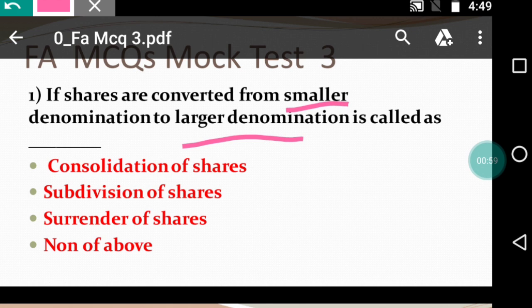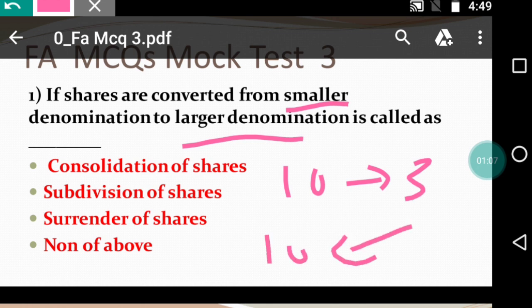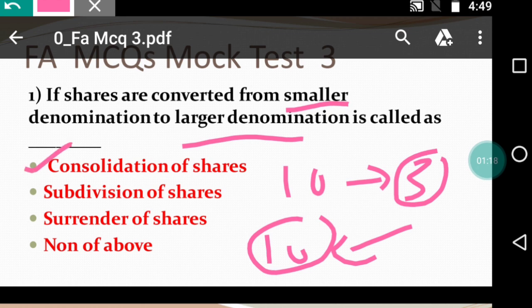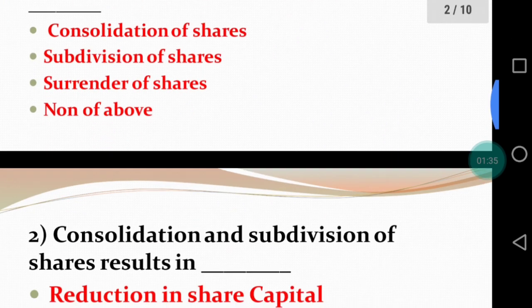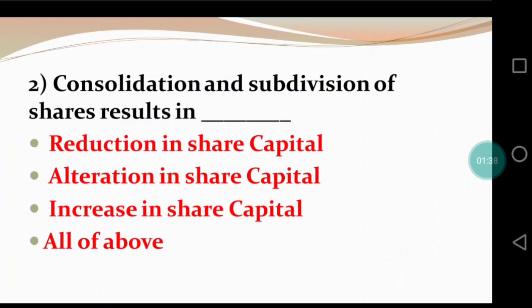If we convert from a smaller denomination to a larger denomination — for example, from a 3-rupee share to a 10-rupee share — that is small to larger, and that is called consolidation of shares. So the right answer is consolidation of shares.